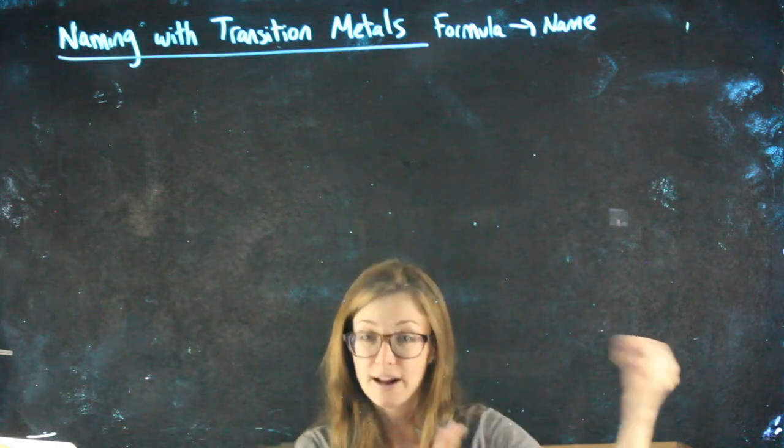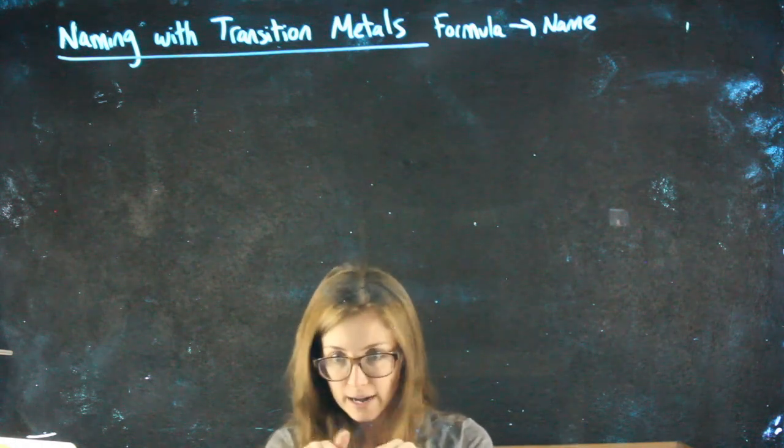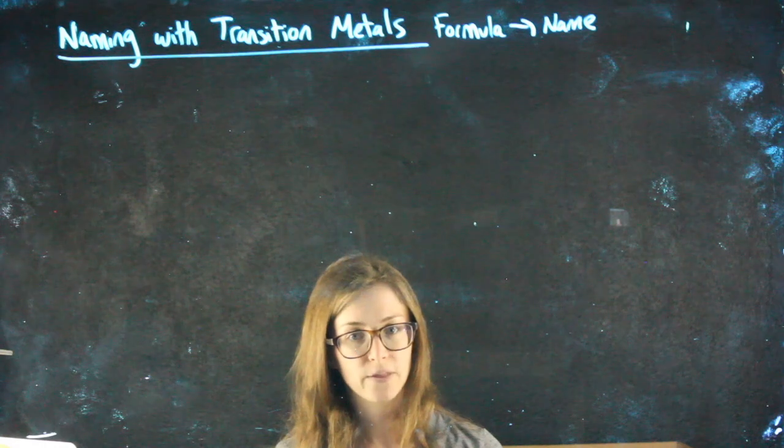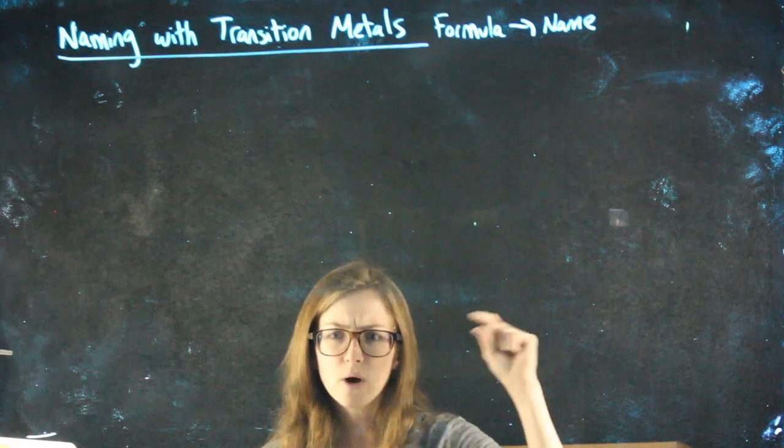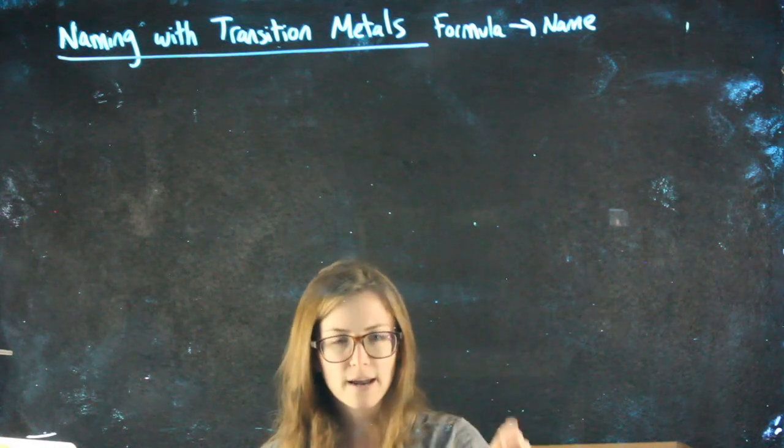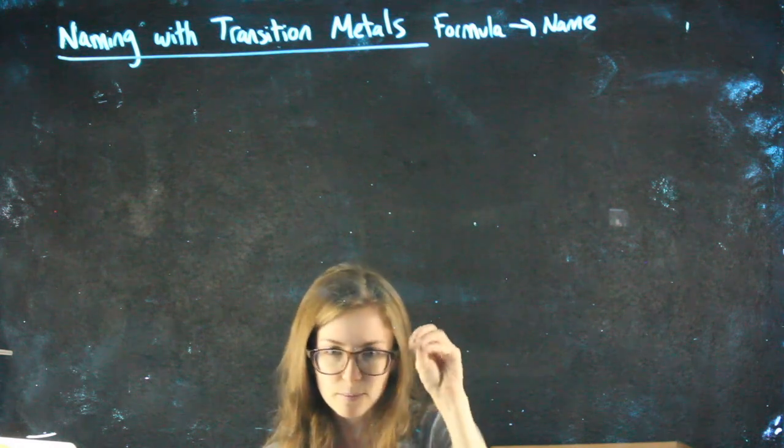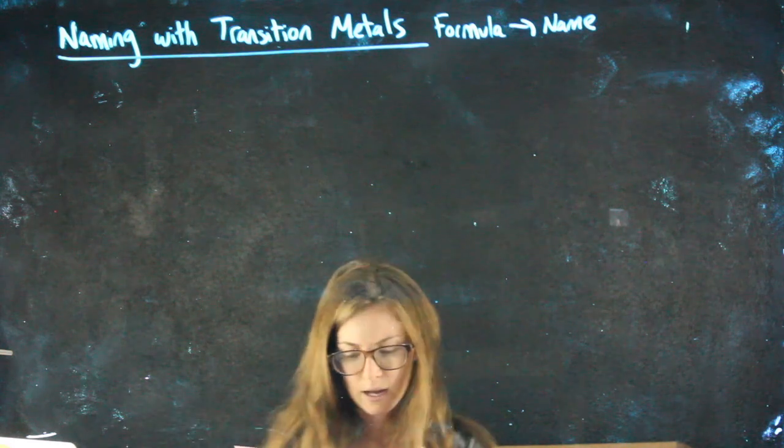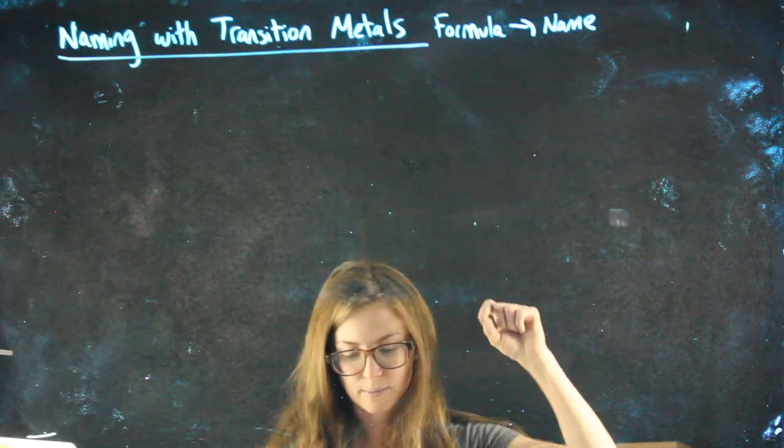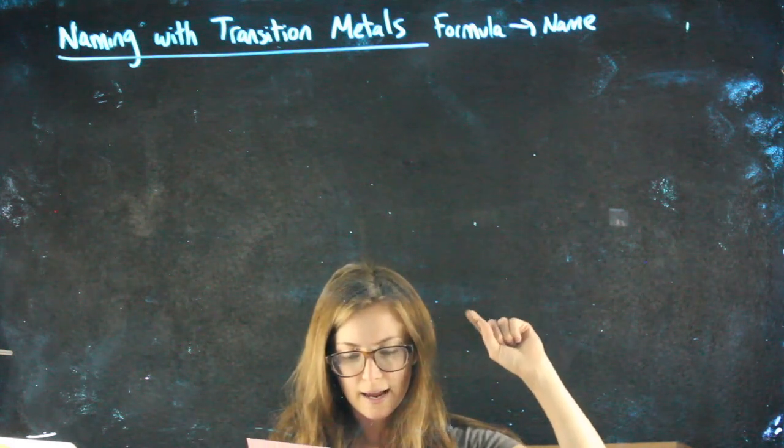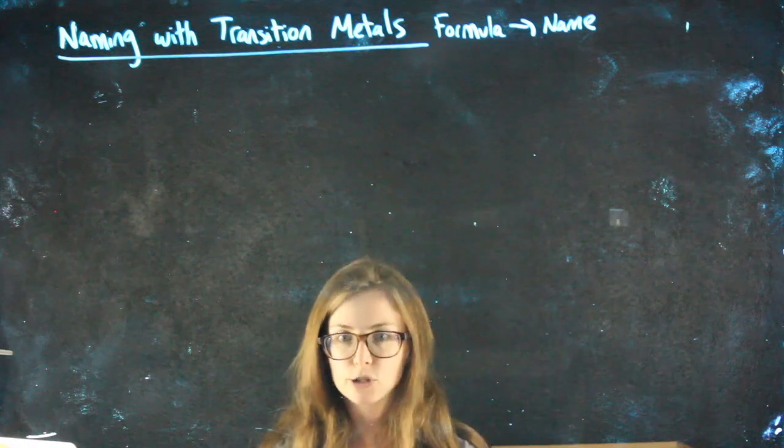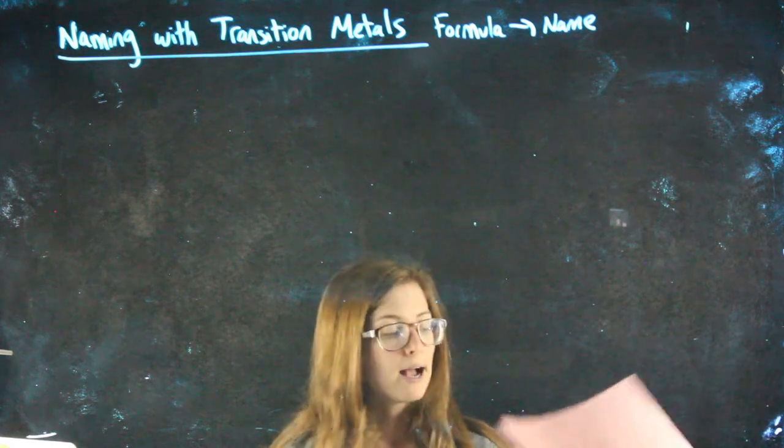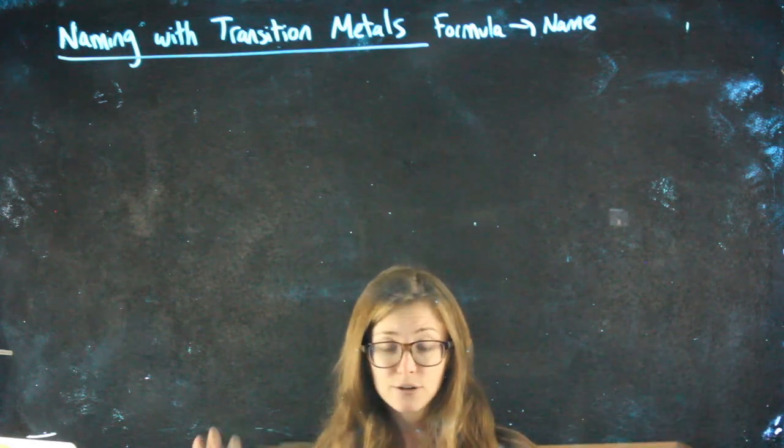There aren't any charges written on there for a few ones in their little square. Silver should have a plus one written in there on your periodic table. Right below silver, gold has a plus three written in, and up into the right, zinc has a plus two. But other than those, none of the transition metals have any charges written there.